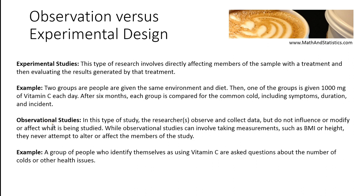An observational study is very different. In an observational study, you only observe and collect data — you do not influence, modify, or affect any of the members of the sample or what is being studied. You can take measurements like BMI or height, or even take blood samples, as long as it's a measurement, but you cannot affect them with a treatment. An example would be a group of people who identify themselves as already using vitamin C answering survey questions about the number of colds they get per year and other health issues. They're taking the vitamin on their own and you're simply asking them questions — you are the observer only. These are the two major types of statistical studies, and I hope this overview of sampling methods and statistical studies has helped.